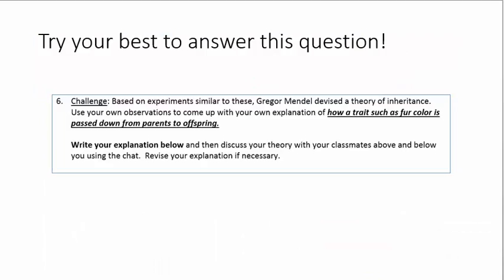Now for number six, it says use your own observations to come up with your own explanation of how a trait such as fur color is passed down from parent to offspring. So just write down what you think is happening when mice get black fur, white fur, or both black and white fur in their offspring.